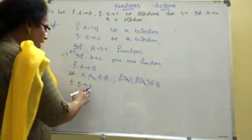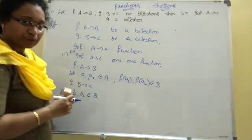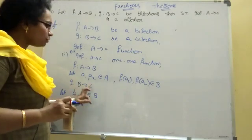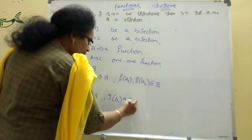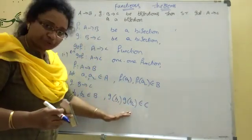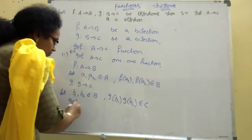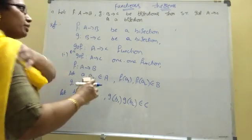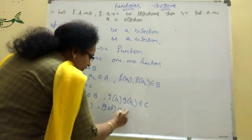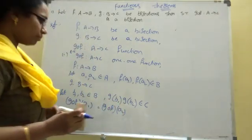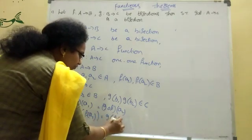G from B tends to C, next function. Let B1, B2 be elements of capital B. The image of C: G of B1 and G of B2 belong to C. This is the image of C. Now G circle F of A1 equals G circle F of A2, that is G of F of A1 equal to G of F of A2.